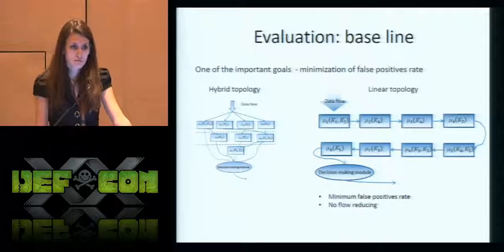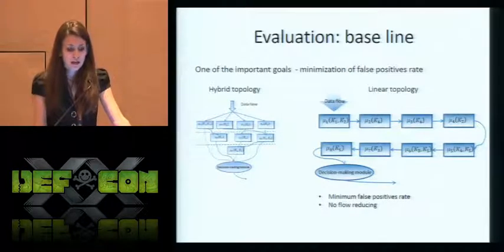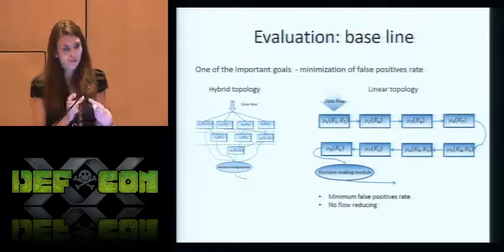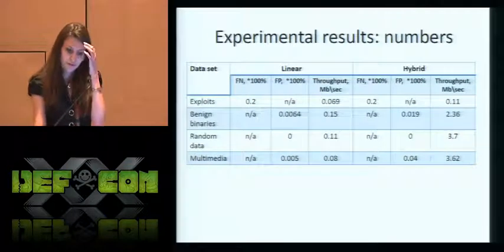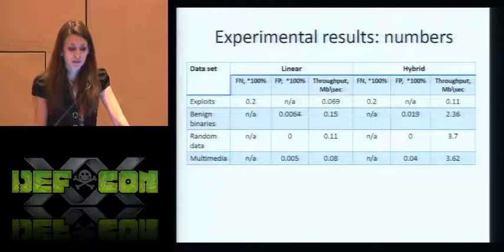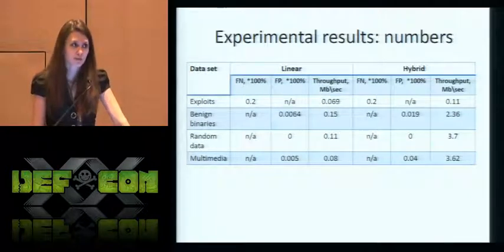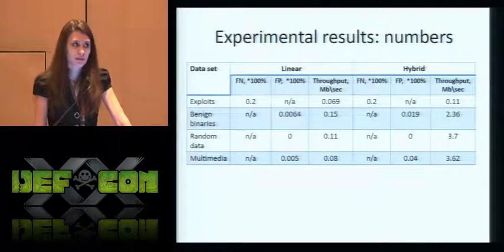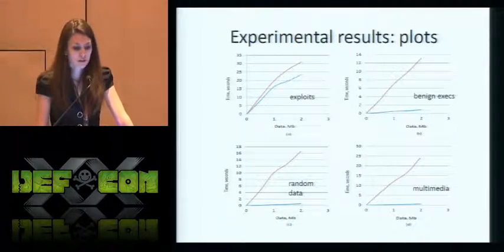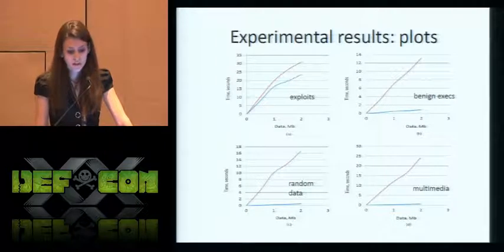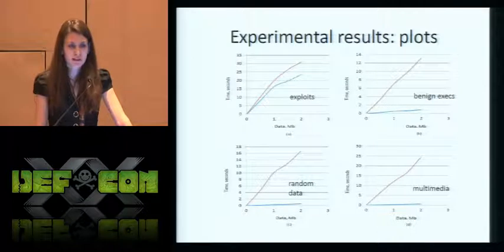As one of the important goals of that work was to minimize false positive rate, we noticed that we could achieve such a goal in a simple linear topology when we execute one elementary classifier after another — but there is no flow reduction in that case. Here are the evaluation results. We compared our hybrid topology with simple linear topology on four different datasets: an exploit dataset, exploits generated by Metasploit framework, benign Windows and Linux binaries, random data, and multimedia. The red line stands for linear topology and the blue line stands for hybrid topology. As you can see, on some datasets the hybrid topology is more effective than linear by up to 45 times.